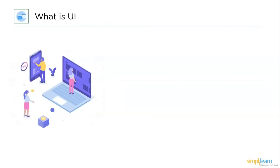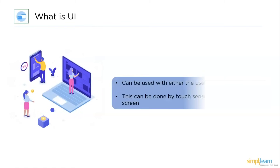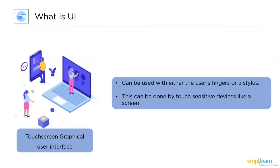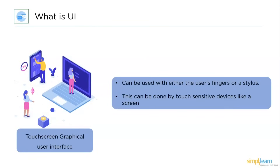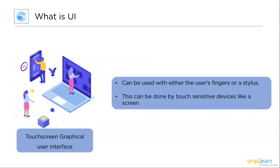The third type is the touch graphical user interface, which can be used with either the user's fingerprints or a stylus to control graphics. This can be done on a desktop computer, laptop, or portable device like a mobile phone. Touchscreen graphical user interfaces are increasingly used in hospital situations and provide both patients and healthcare workers with a number of advantages.